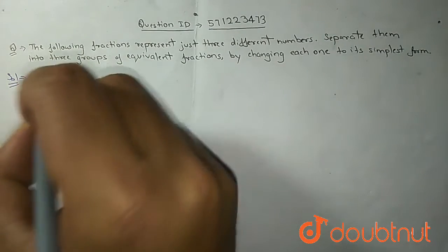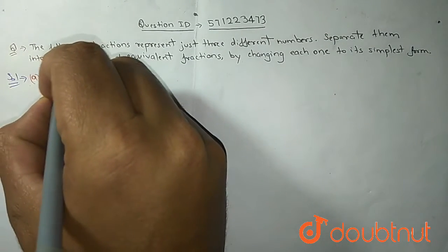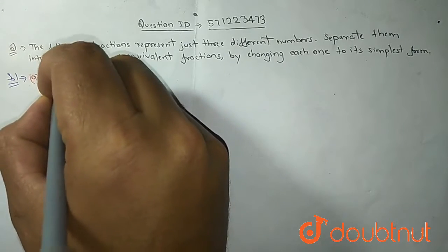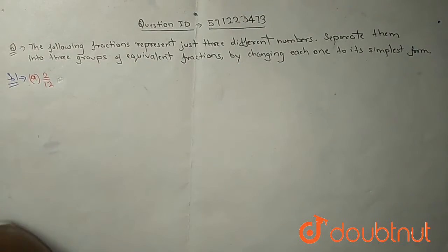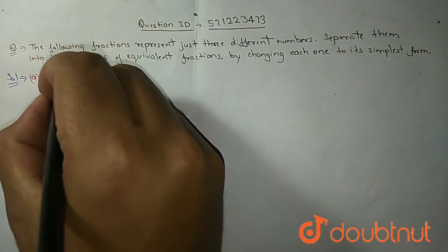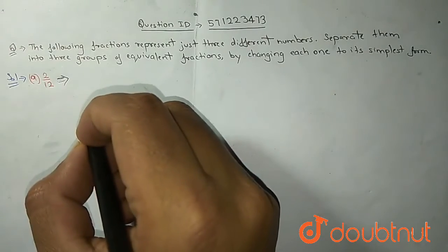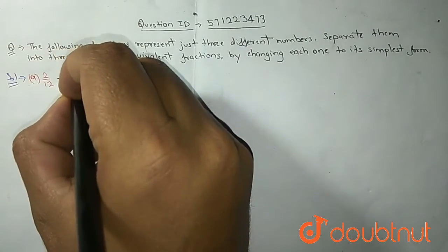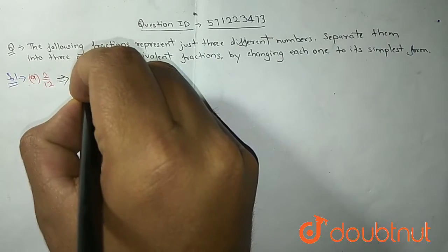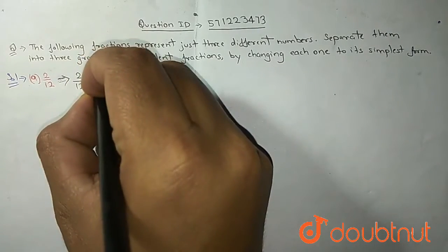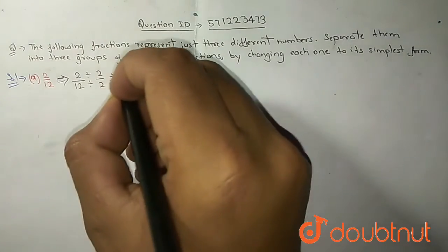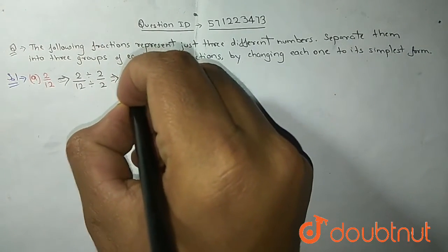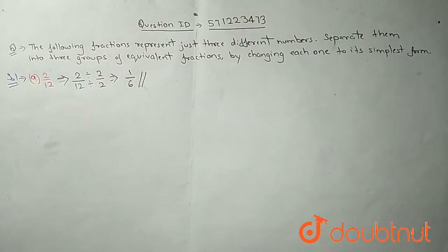First our equation is 2 by 12. We divide 2 by 12. We divide by 2 from numerator and denominator. Then we will get 1 upon 6.